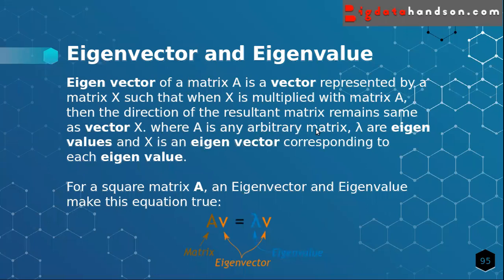Where A is any arbitrary matrix, lambda are eigenvalues, and X is an eigenvector corresponding to each eigenvalue. For a square matrix A, an eigenvector and eigenvalue make this equation true: AV = λV. Here A is the matrix, V is the eigenvector, and lambda is the eigenvalue. When we multiply the matrix A with the eigenvector, it equals multiplying lambda with the eigenvector.